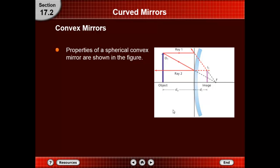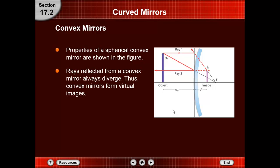The properties of the spherical convex mirror are shown in the figure. The rays reflected from a convex mirror diverge. A convex mirror forms a virtual image. Ray one: when light passes parallel to the principal axis, it will reflect passing through the focal point.